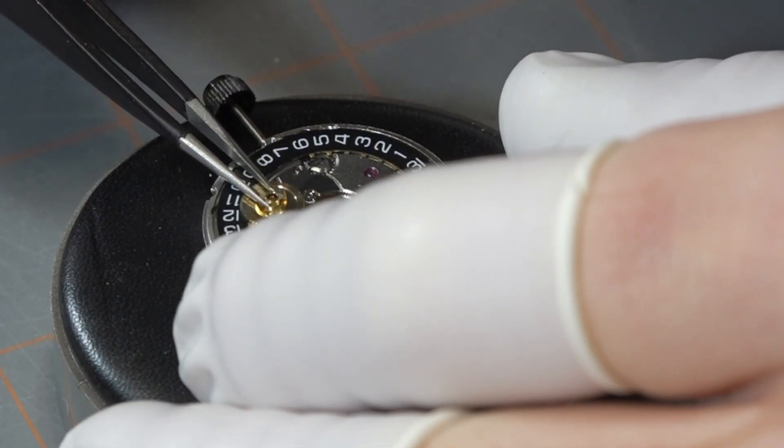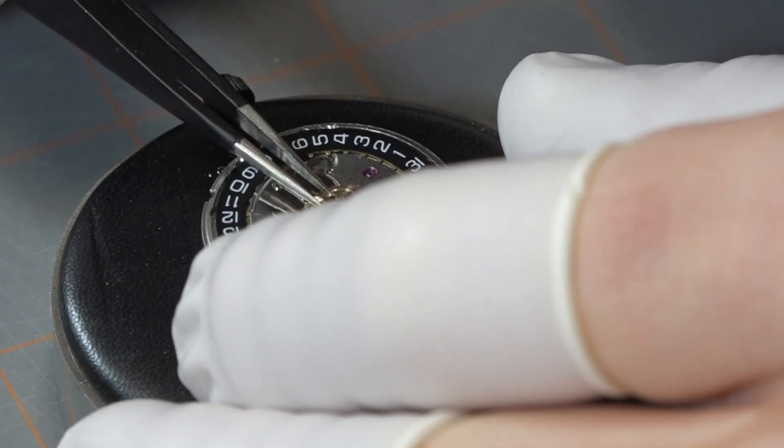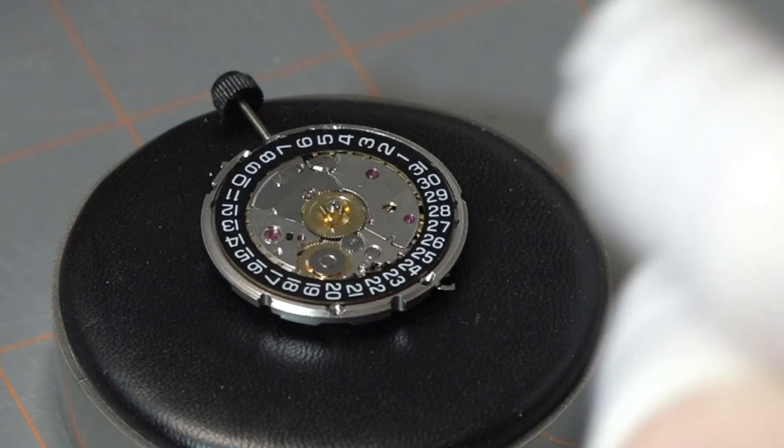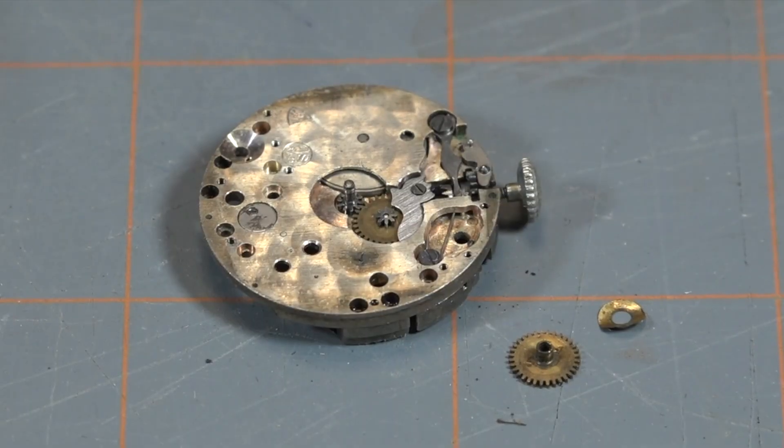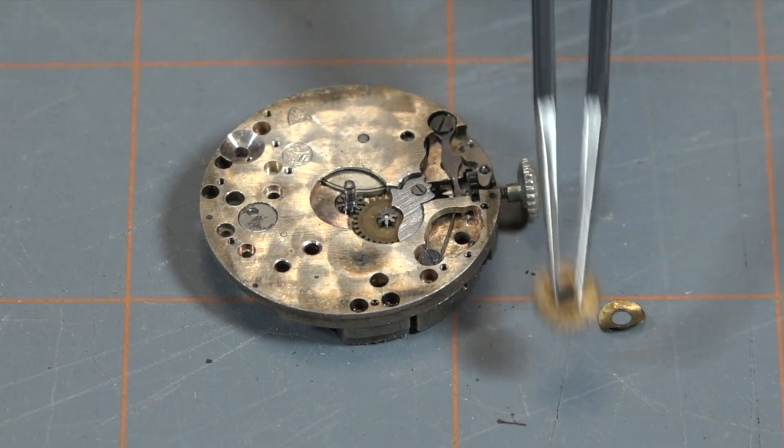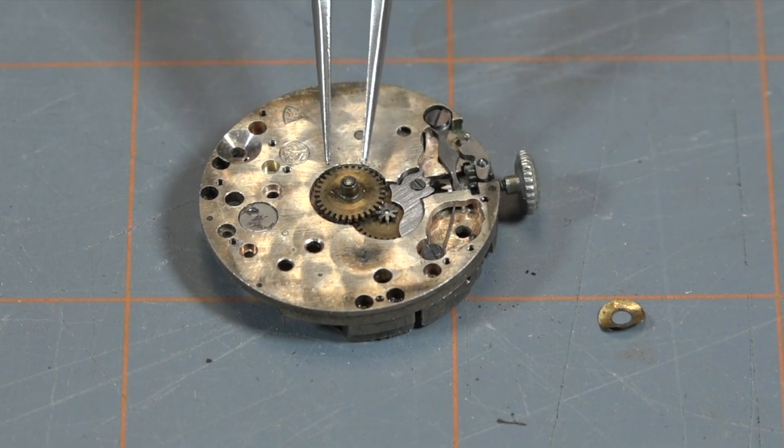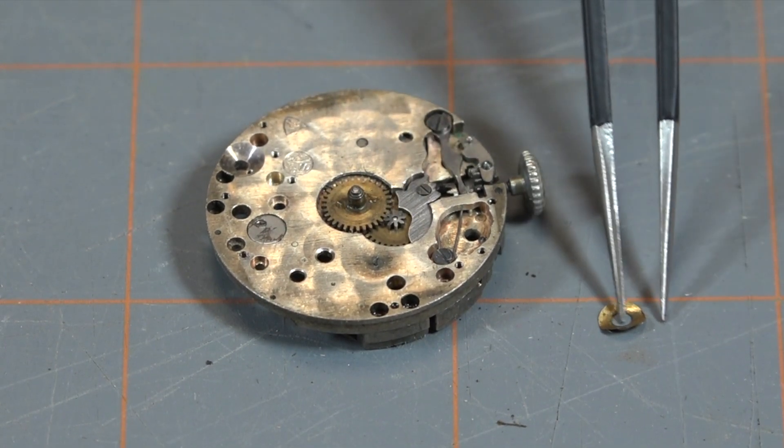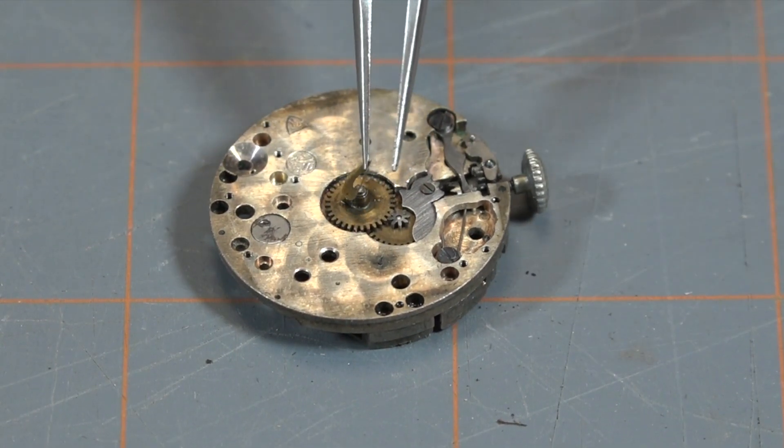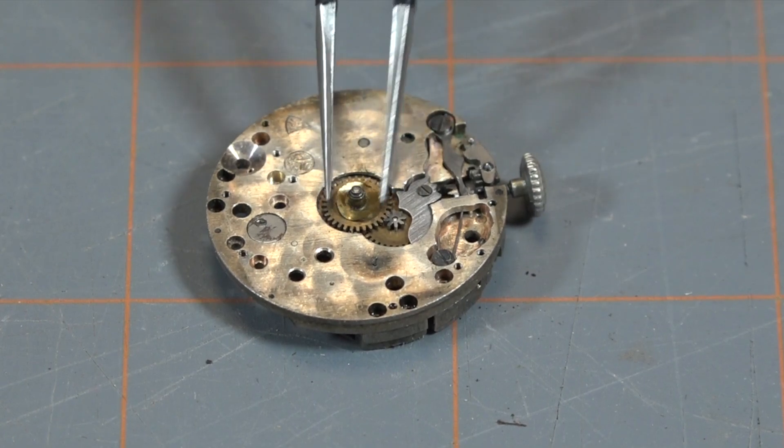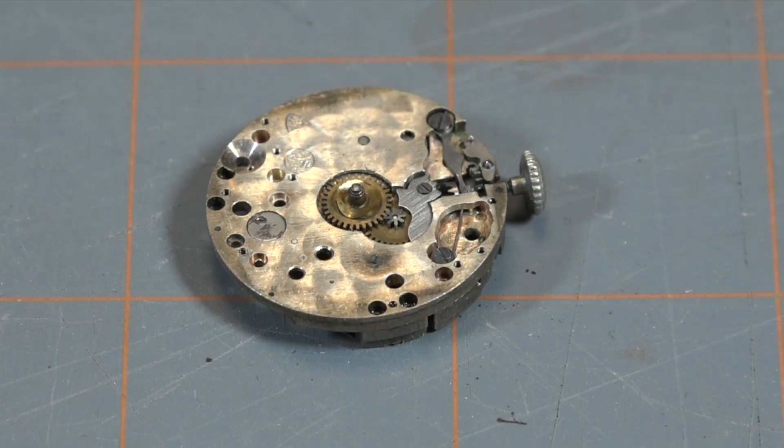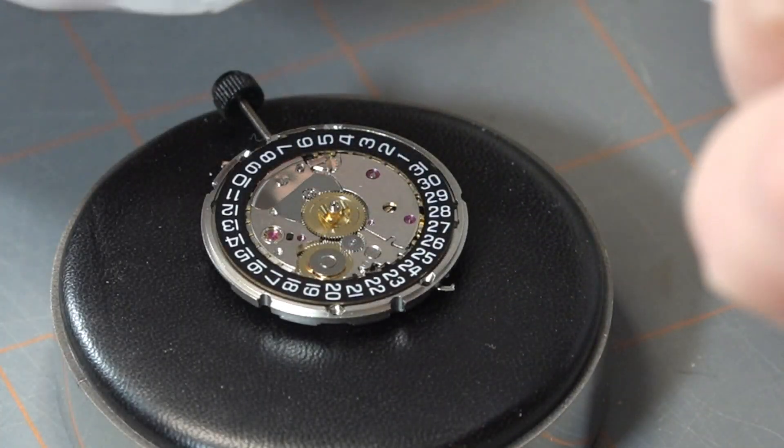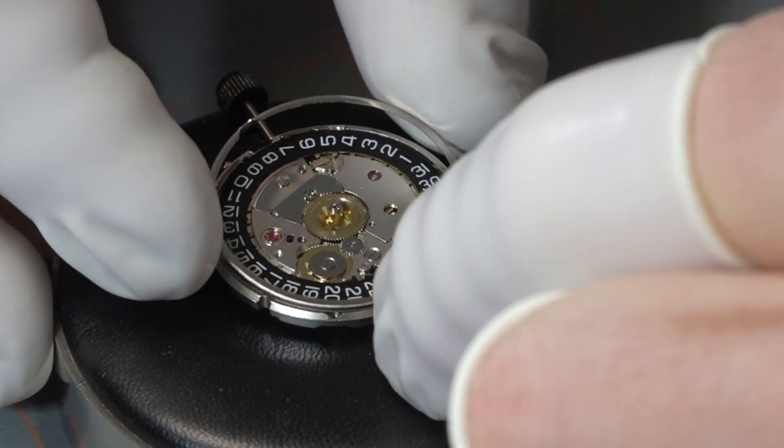The next part that goes on is the hour wheel. This is what the hour hand is attached to. I realized in post that this was not a good shot, so here is another example. Basically when the movement arrived, this wheel is detached and you place the wheel on the middle and then place the washer on top. The washer keeps space between the back of the dial and the hour wheel itself.